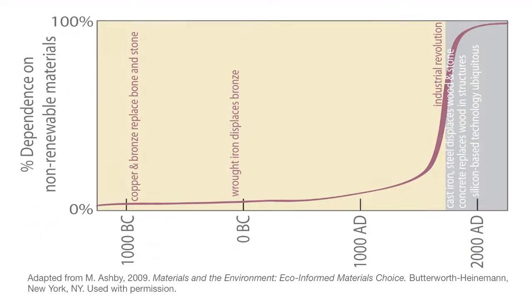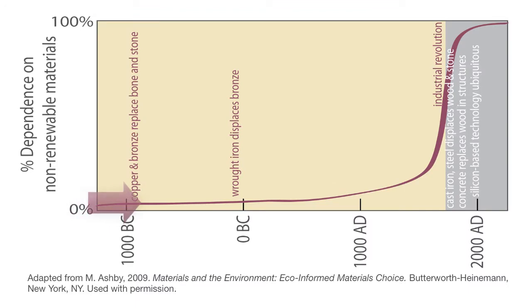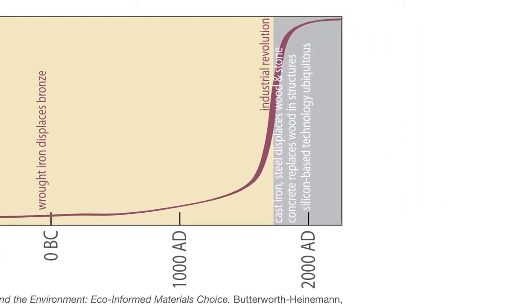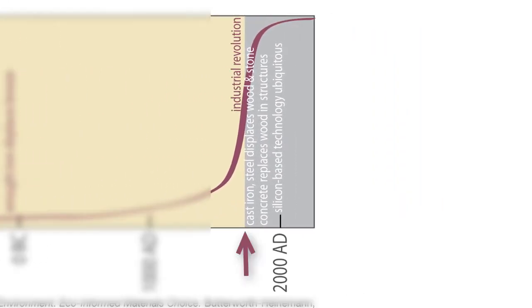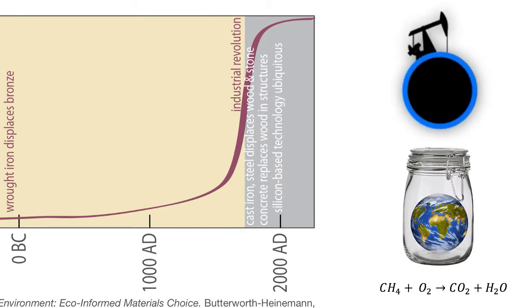Let's first take a historical look at materials. This graphic depicts that the human race has become increasingly dependent upon materials that are not sustainable — that is, these material resources are not renewed in the closed thermodynamic system of our planet once they have been used up. The gray line marks the industrial revolution, the beginning of the dependence on fossil fuels.